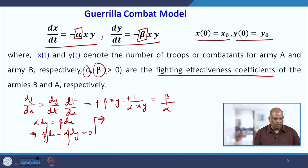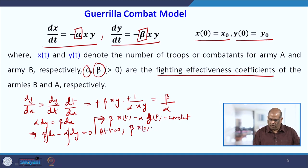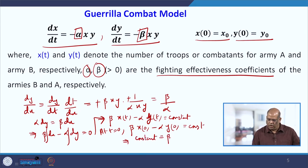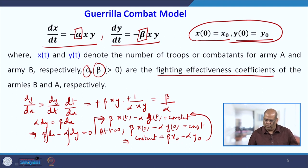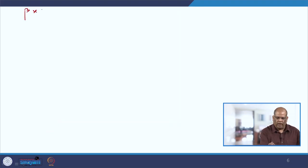This implies β·x(t) − α·y(t) = constant. At t = 0, we have β·x₀ − α·y₀ = constant, so the constant equals β·x₀ − α·y₀. Substituting back gives the relation: β·x(t) − α·y(t) = β·x₀ − α·y₀, which allows us to express y in terms of x.